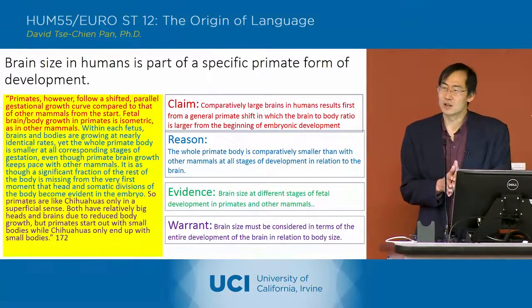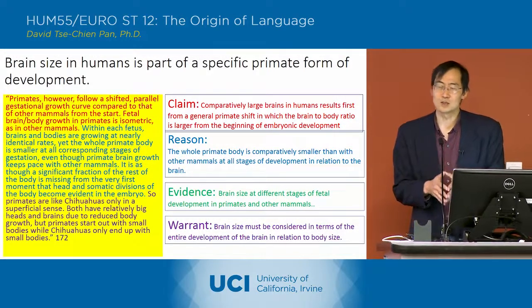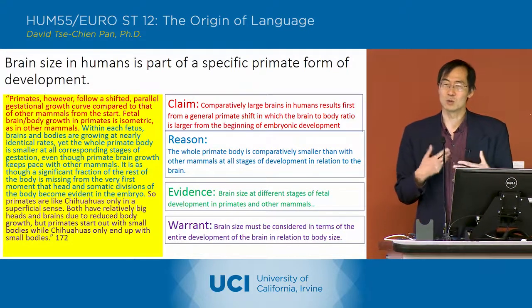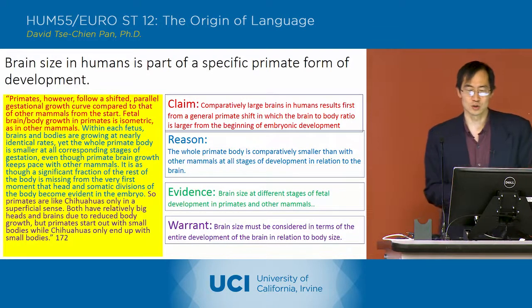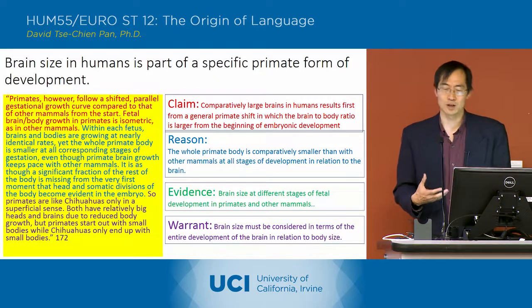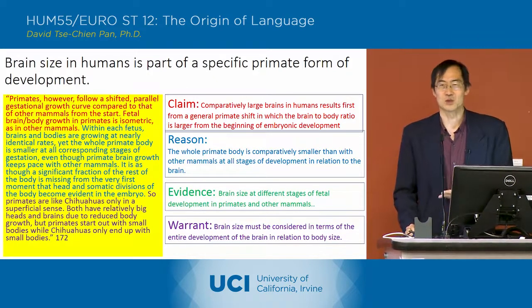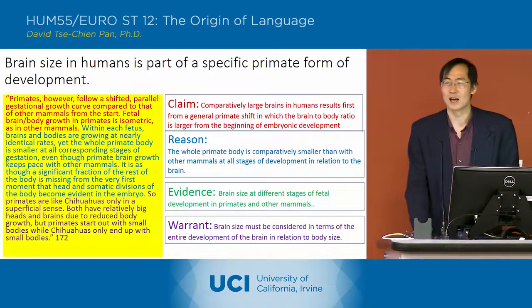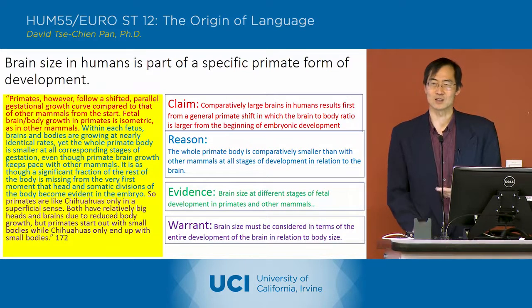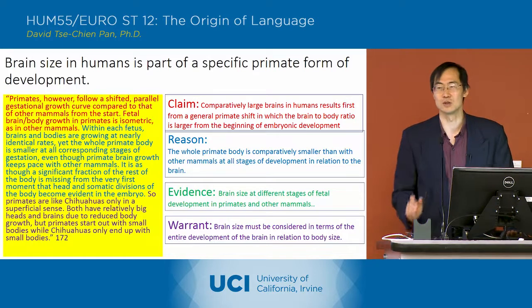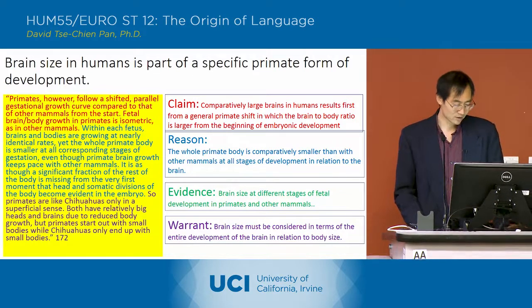In this section of the book, The Symbolic Species, Terence Deacon talks about the ways in which the human brain is suited to human language. He gives a number of detailed descriptions of different aspects of brain development and brain structure. I'm going to give you the big picture of how he sees that fitting into the way language functions and the origin of language.